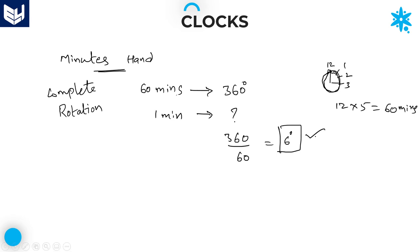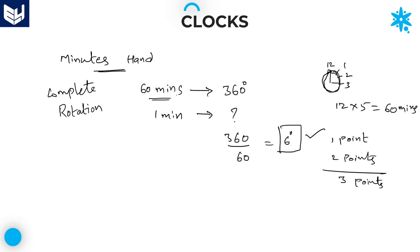This is the important point related to the minutes hand. In the minutes hand, one complete rotation is 60 minutes and the angle is 360 degrees, giving 6 degrees per minute. If you remember these 3 points — 2 for the hours hand and 1 for the minutes hand — you can easily solve problems related to clocks. If an angle is given and you want to calculate the time period, or if time is given and you want to find the angle between the hands, you can use this method.